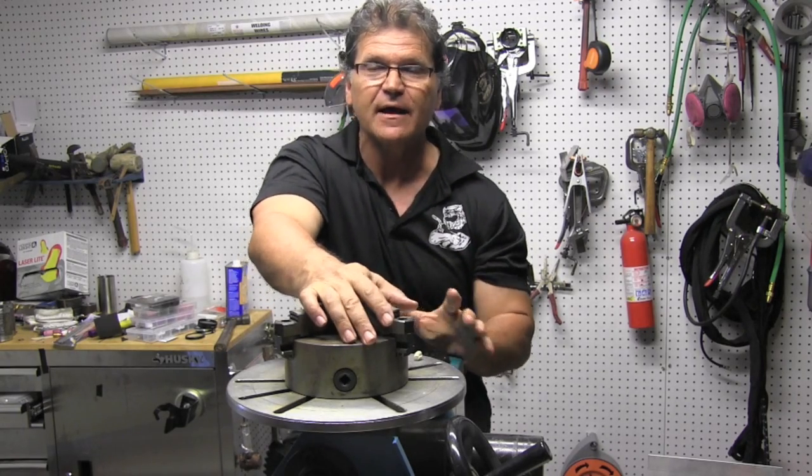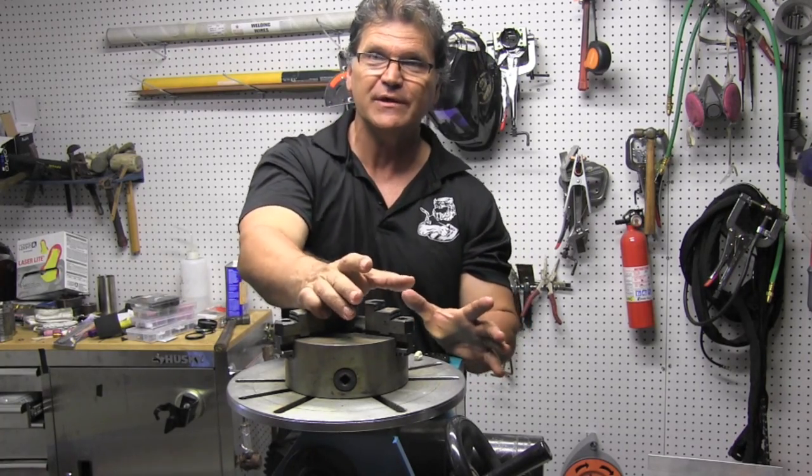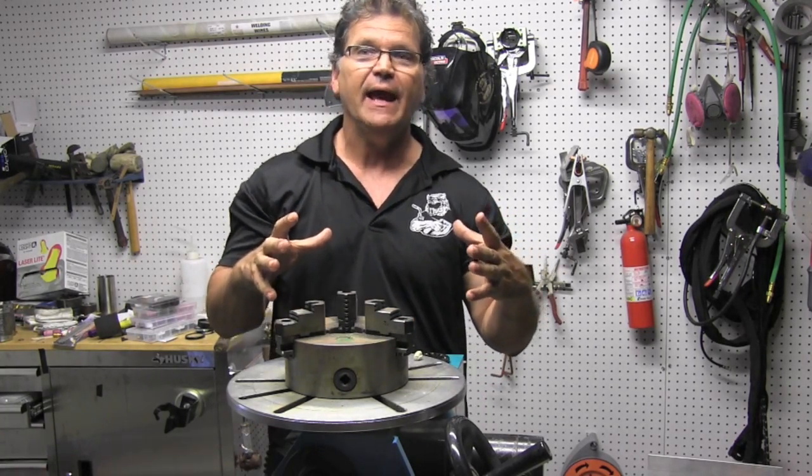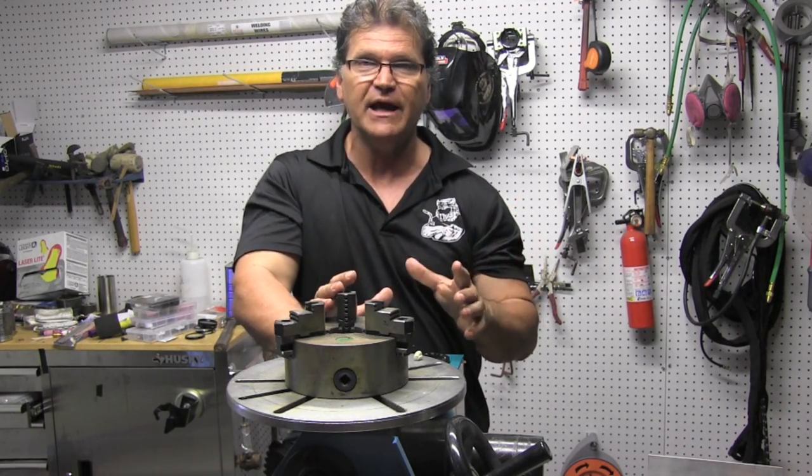Hey, Jody here with WeldingTipsAndTricks.com. This is a part two video. Part one was outside corner joints and the application was building a tank, an expansion tank for coolant for a supercharger. It had an automotive application.